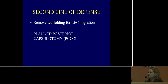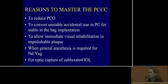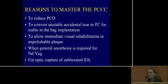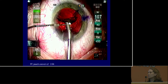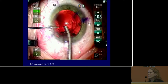A second-line defense is removing the scaffolding by planning a primary posterior capsulotomy. This can also cause opacification much more commonly in pediatric cases. Reasons to master the primary posterior capsulotomy include: reducing PCO, managing accidental tears in the posterior capsule to stabilize for bag implantation, immediate visual rehabilitation with an unpolishable plaque, patients needing general anesthesia who cannot return for YAG, and cases of lens subluxation to improve central stability.